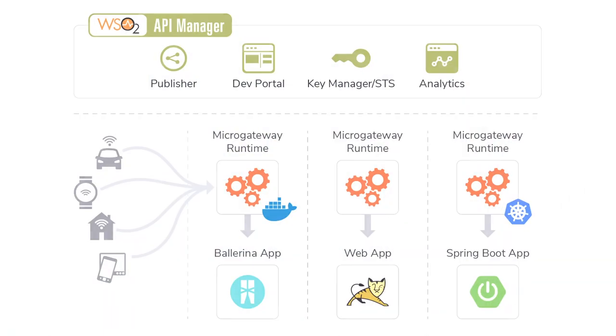The publisher and developer portal together complete the design-time aspects of your API ecosystem. Next is the runtime, which consists of the API Gateway and the API Key Manager. The API Gateway, which also comes in the flavor of an API Micro Gateway, is the primary component that intercepts all requests going into your services and microservices. It applies various policies such as security and rate limiting, and acts as the entry point for feeding insights into the analytics engine for gaining business insights.